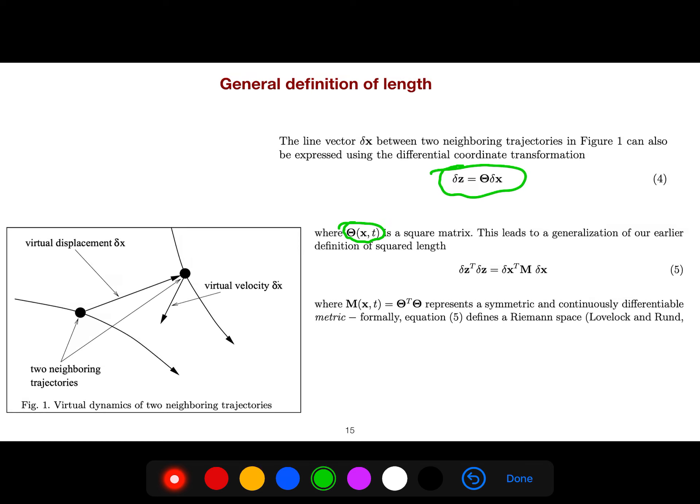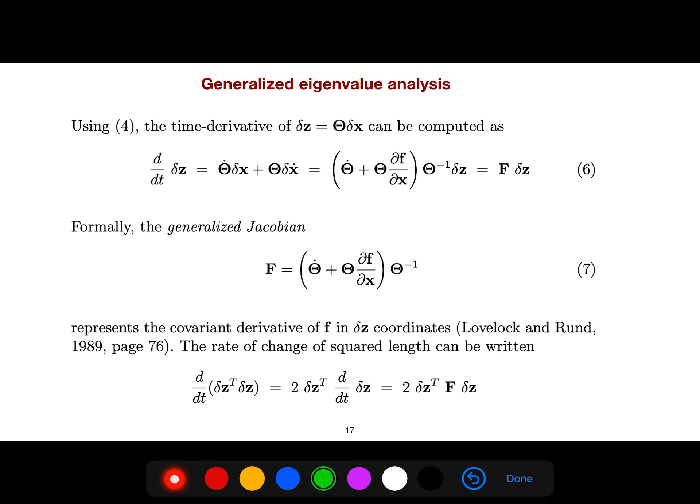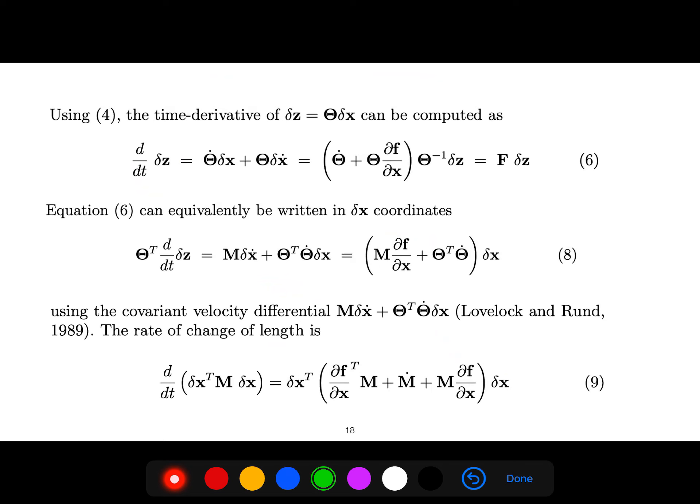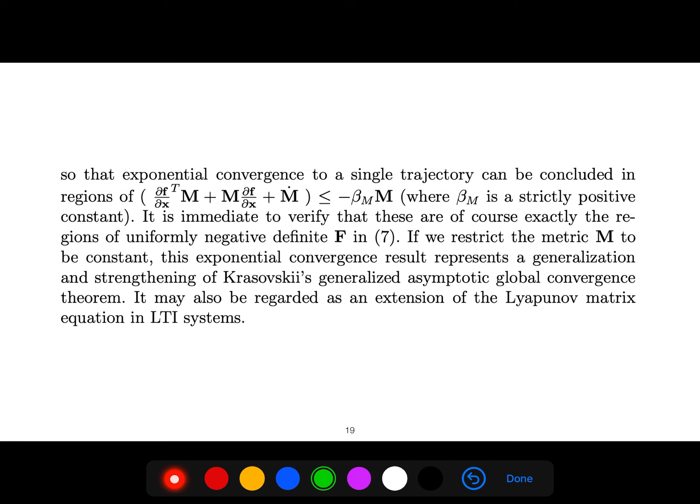Or different kinds of geometry of manifold, then you understand the meaning, the geometric meaning of these things. But if you don't care about geometry, you can just take derivative with respect to time, and you will see that this happens. If you take derivative with respect to time, this is now your generalized Jacobian. And the rate of change of squared length is this one, and it can be equivalent to be written in delta x coordinate, if we come back to the original. And the rate of change of length is now this. So this is important, this is the rate of change. What can we do with that? The exponential convergence to a single trajectory can be concluded in this region. Now we have generalized our previous theorem.